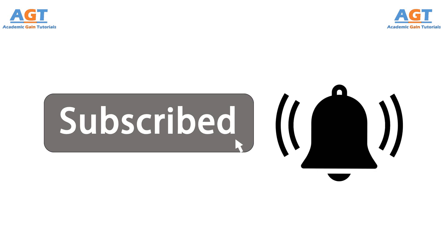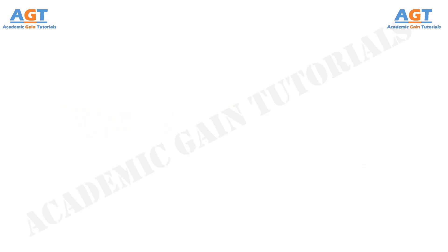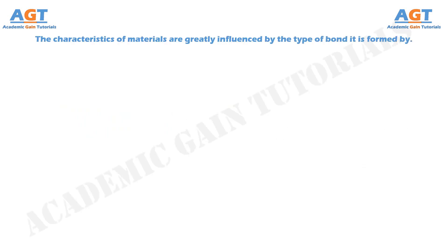So, into the topic: Effect of Bonds on Material Characteristics. The characteristics of materials are greatly influenced by the type of bond they are formed by. Thus, different materials formed by a similar type of bond possess some common characteristics. These are described below.